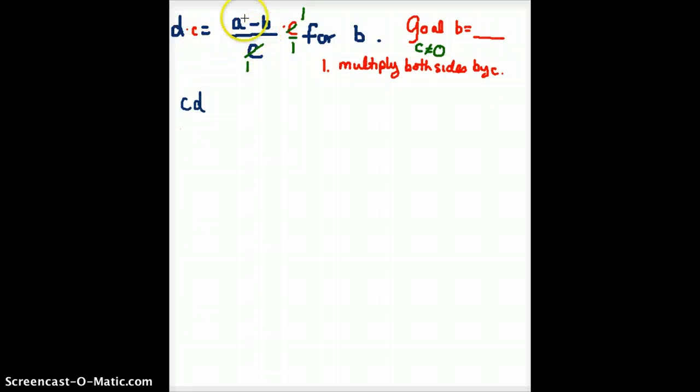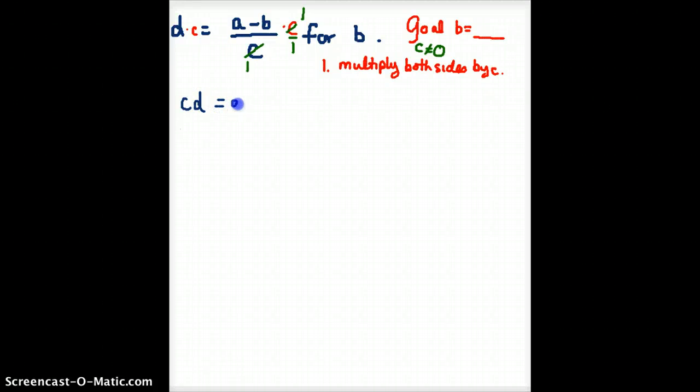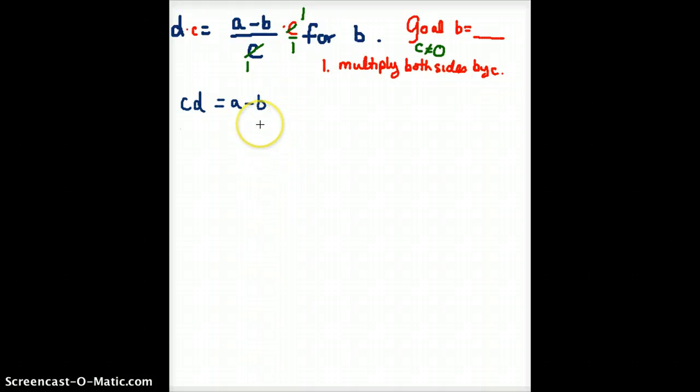So, on the right hand side here, A minus B times one is A minus B. And on the denominator we get over one, but we don't need to write that.